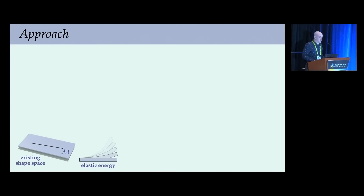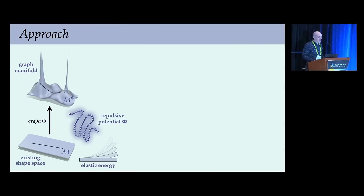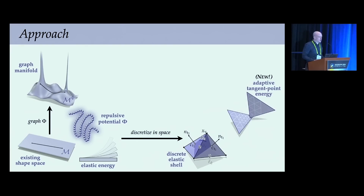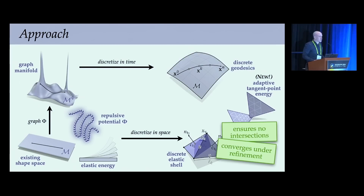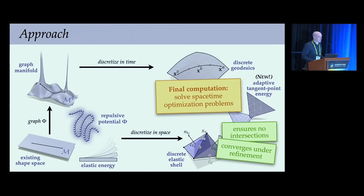Our approach starts with some existing shape space—for instance, based on an elastic energy—and picks a repulsive potential that penalizes points in close proximity. Graphing this potential gives a new shape space called the graph manifold, where it takes infinite time to reach an intersecting configuration. We then discretize our energies in space, introducing a new adaptive tangent point energy which ensures no intersections and, unlike past collision potentials, converges to a meaningful smooth limit under refinement. We finally discretize in time and solve space-time optimization problems to get intersection-free poses and trajectories.